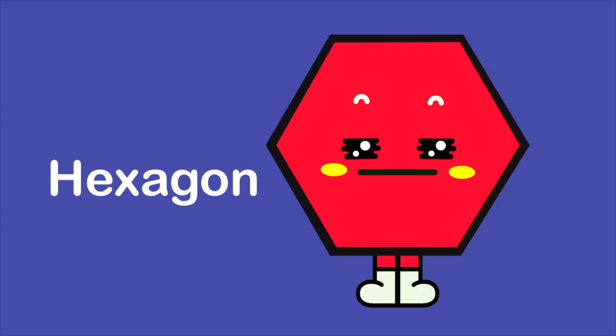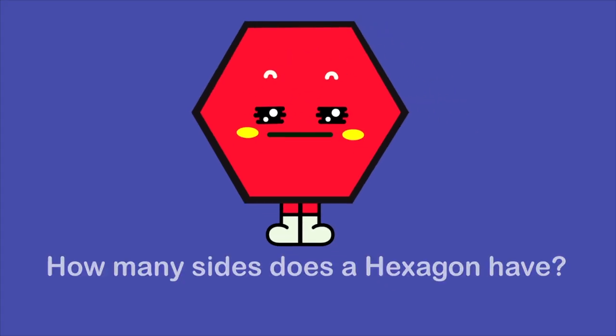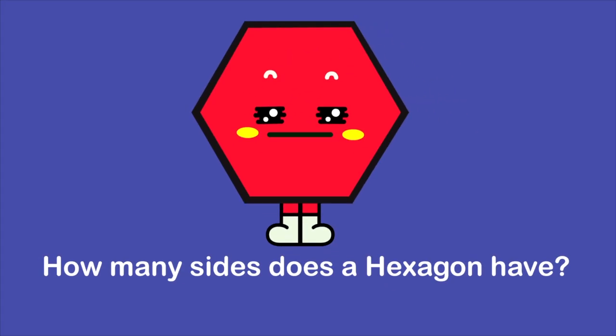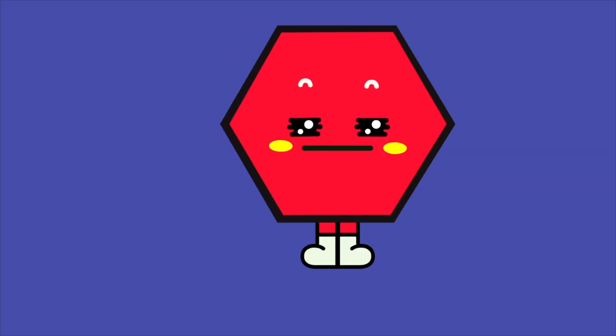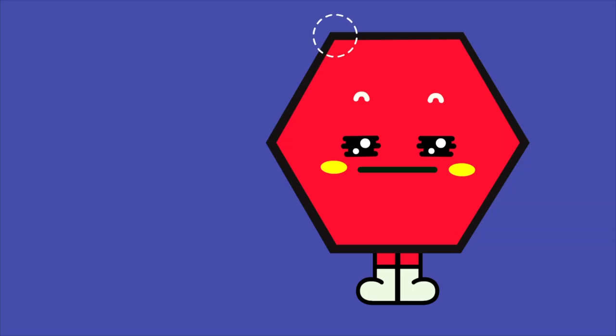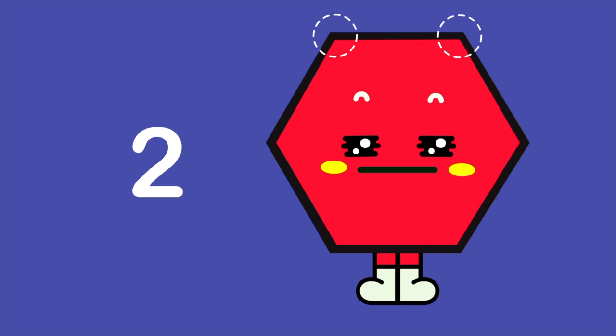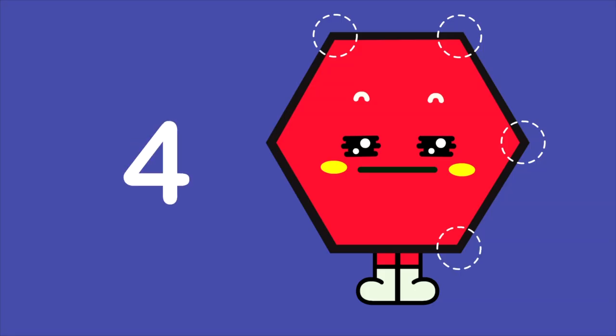Hexagon. How many sides does a hexagon have? One. Two. Three. Four.